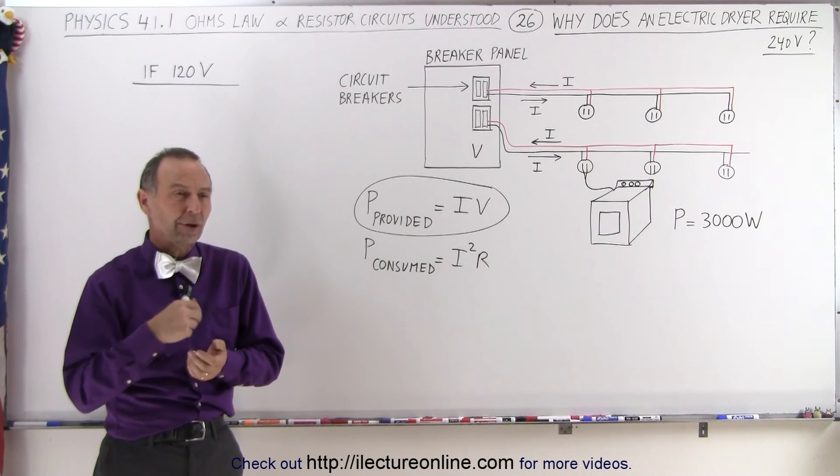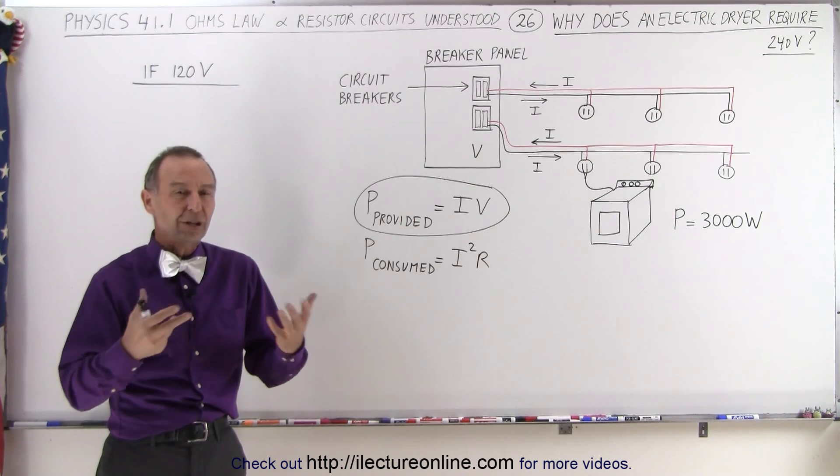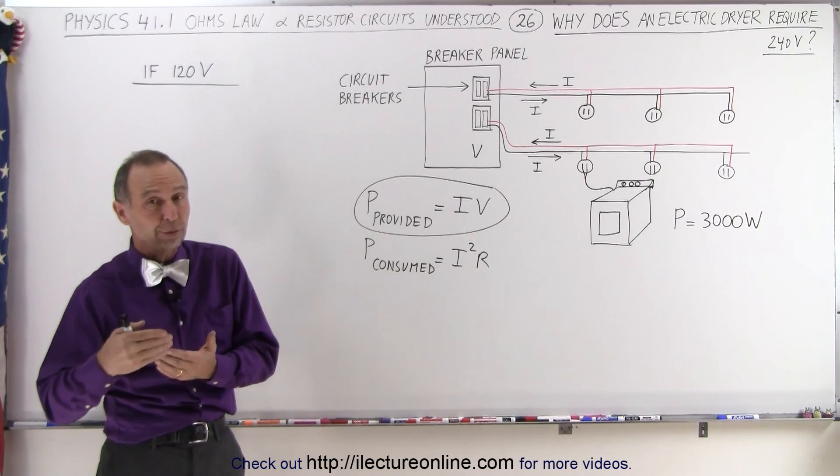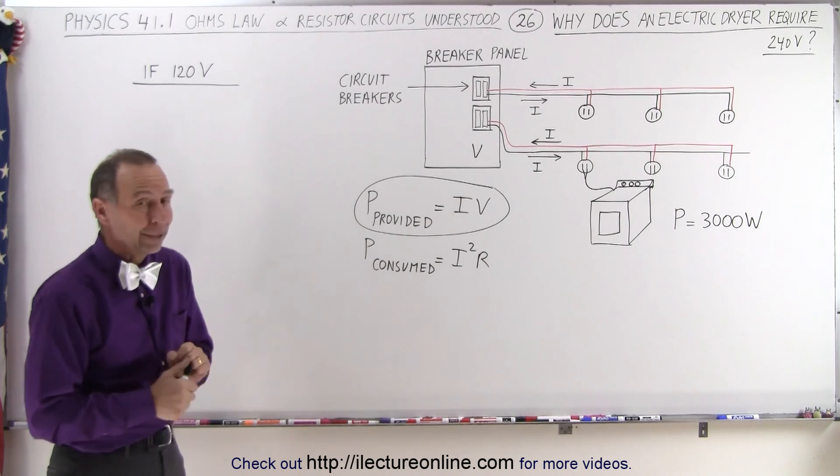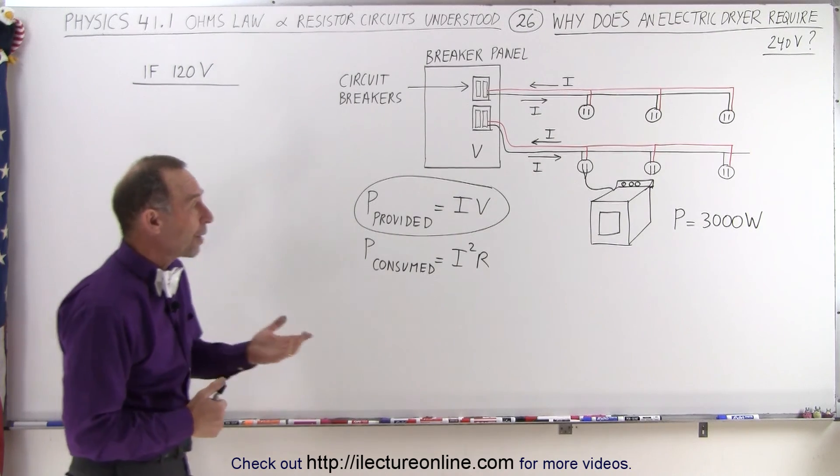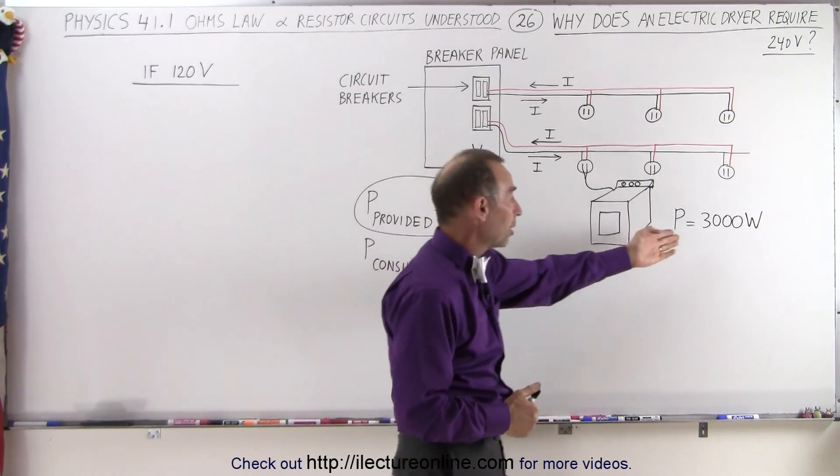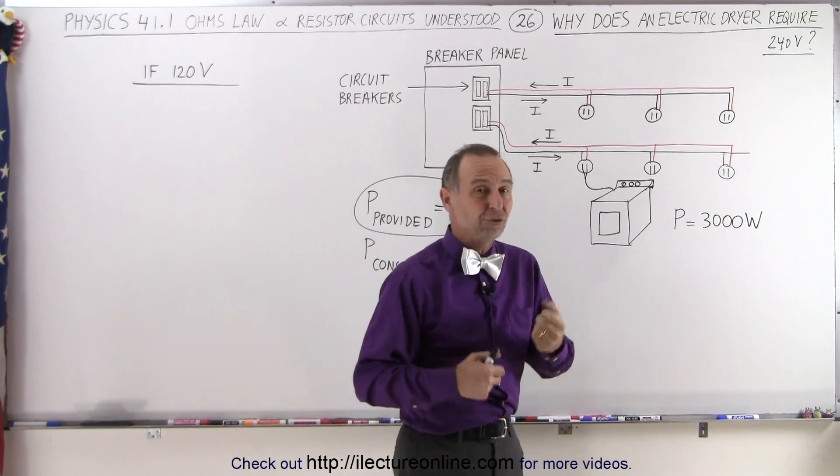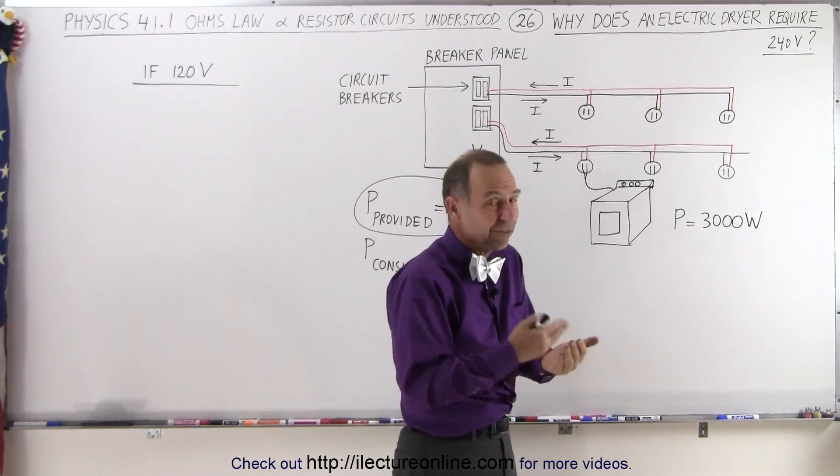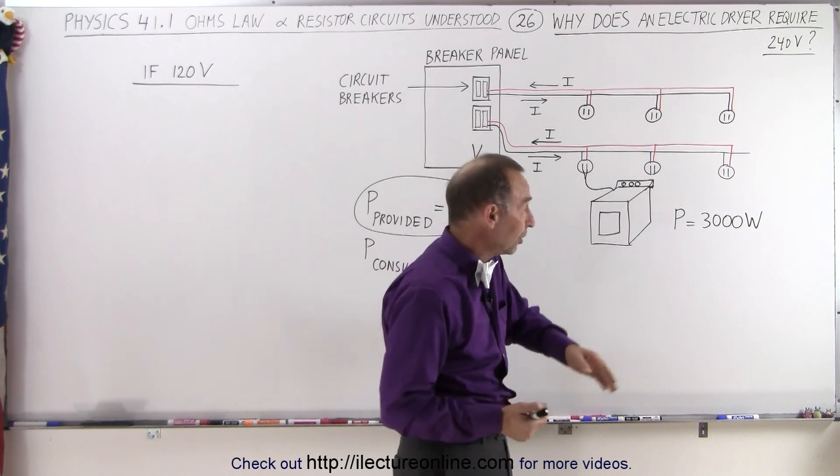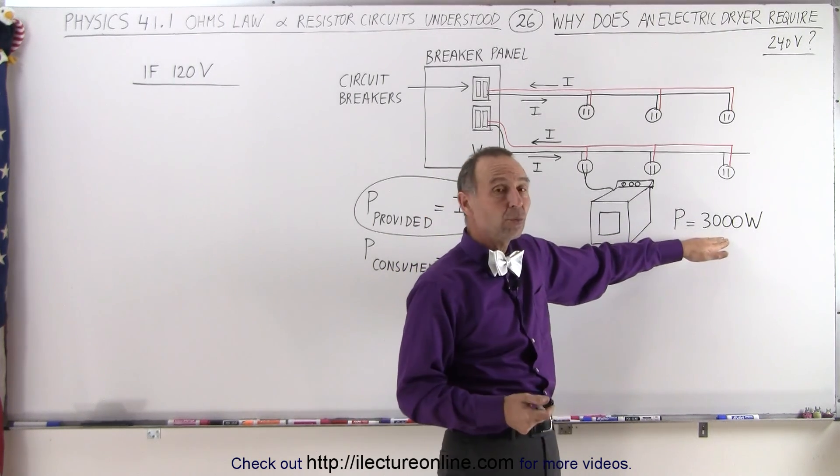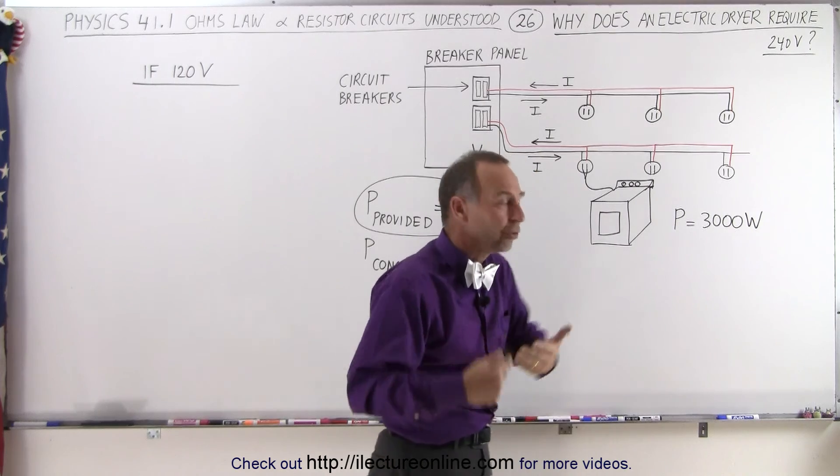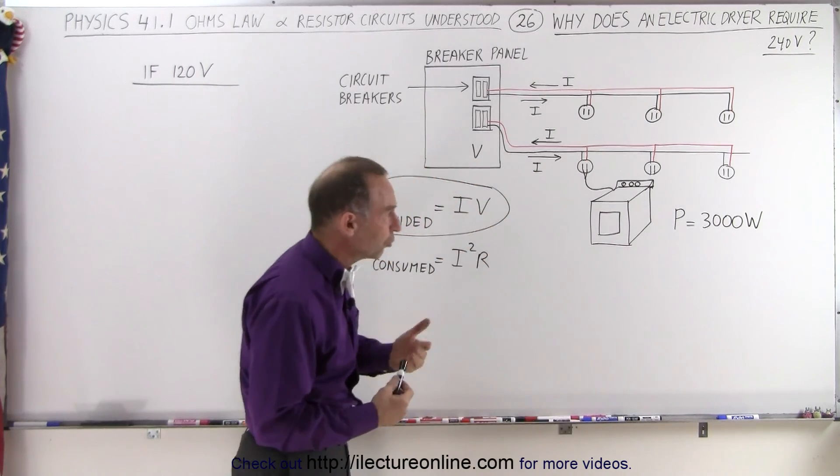I know that there are other countries where household circuits require 240 volts, but not here. But they do make a special exception. Dryers, for example, draw a lot of power. A dryer typically can draw anywhere from 1500 to 5000 watts, so let's take an average of about 3000 watts required to run the dryer and get the clothes dry.